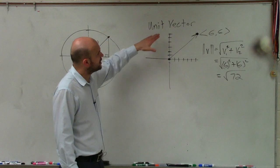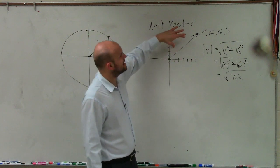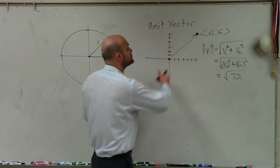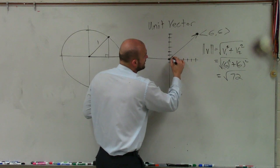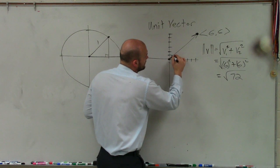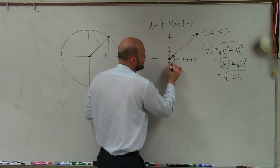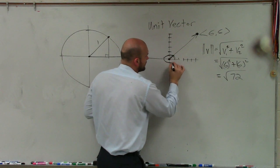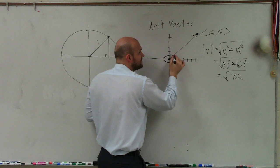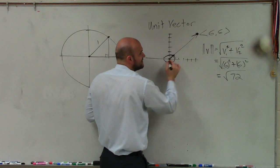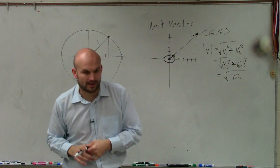Well, what we want to do is a unit vector is a vector that has the exact same direction. However, it only has a magnitude of 1. So if I was going to kind of create a unit circle here, that unit vector is going to lie on the same vector, but it's only going to have a magnitude of 1.